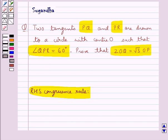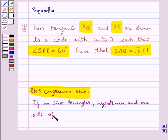According to this rule, if in two triangles the hypotenuse and one side of a triangle are equal to the hypotenuse and one side